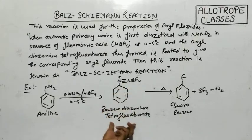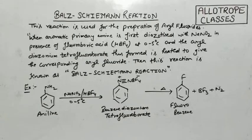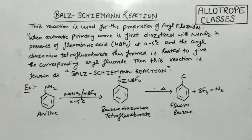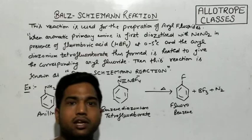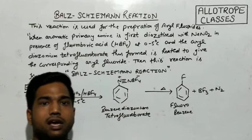In that reaction, benzene diazonium fluoride is formed, while in this reaction, benzene diazonium tetrafluoroborate is formed. When we heat it up, the compound formed is aryl fluoride — specifically, fluorobenzene. Students, I hope the Balz-Schiemann reaction is now clearly understood.